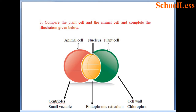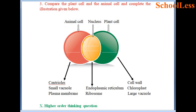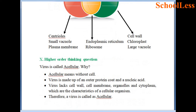Question 3: Compare the plant cell and animal cell. Parts unique to animal cell: centrioles, small vacuoles and plasma membrane. Parts shared (nucleus region): endoplasmic reticulum and ribosomes. Parts unique to plant cell: cell wall, chloroplast and large vacuole.